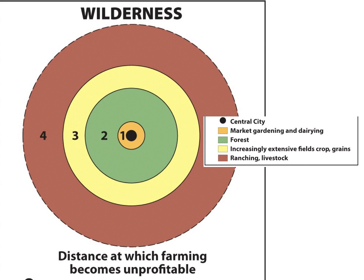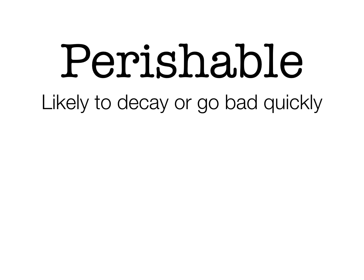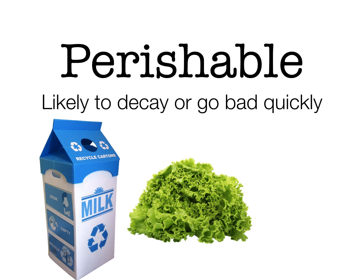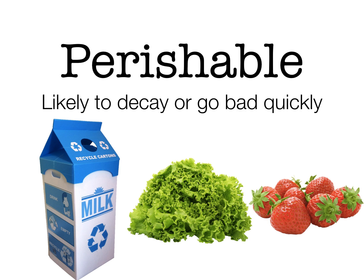The whole idea behind this model is that crops are located to maximize profit and minimize perishability. To be perishable means to be likely to decay or go bad quickly. Some examples of highly perishable food items are milk, which does not last very long, lettuce, which goes bad within a few days, and strawberries. Imagine lettuce unrefrigerated during the time of von Thünen — these items spoil very fast.